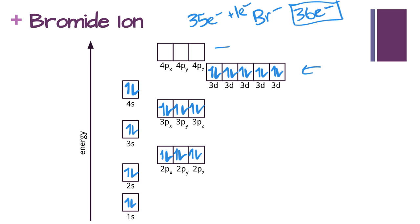Our next set of orbitals we're going to fill are our 4p's, so we go one, two, three, and then four, five, six, and that makes 36 electrons. This would be the completed orbital diagram for a bromide ion.